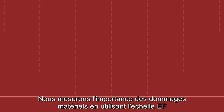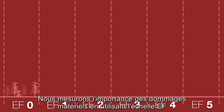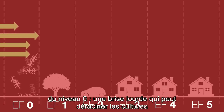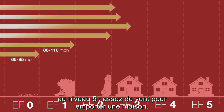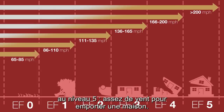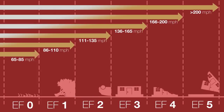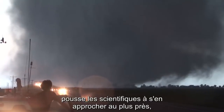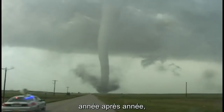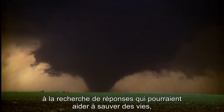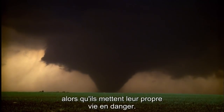We measure the amount of damage to land and property using the EF scale, which ranks tornadoes on six different levels — from zero, a heavy breeze that can uproot crops, to level five, enough wind to pick up a house. It's the desire to better understand them that sends scientists into the field year after year in search of answers that can hopefully save lives while putting their own at risk.